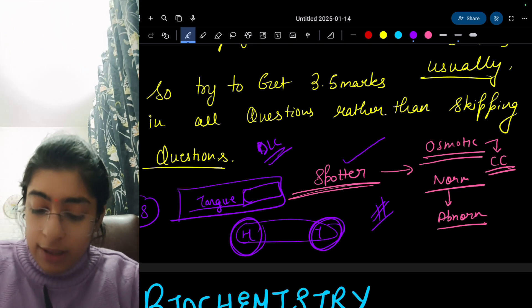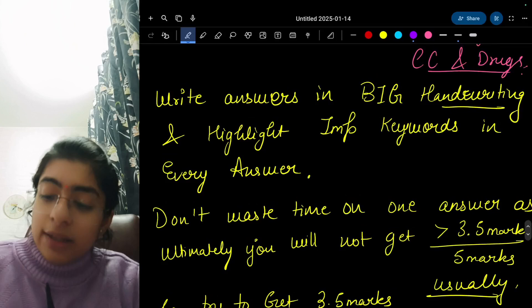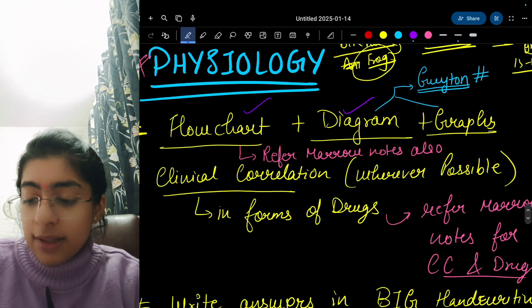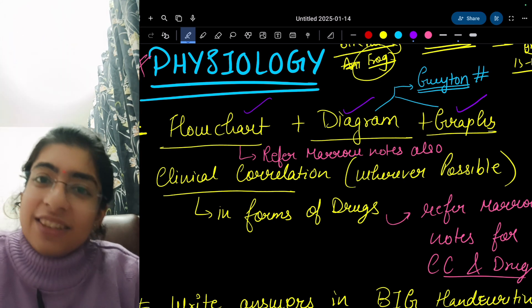In practical, you are having spotter and this peripheral smear and this much only. In theory, I have already told you flowchart, diagram and graphs. This will basically make you exam ready for physiology and maybe first year.